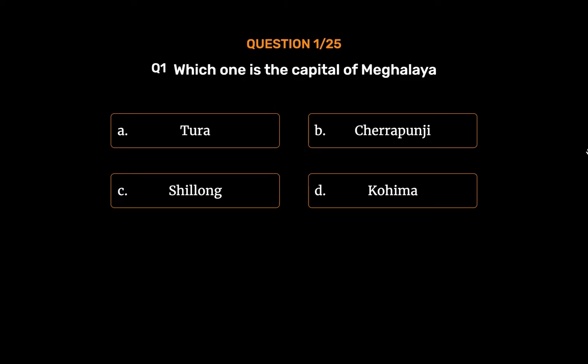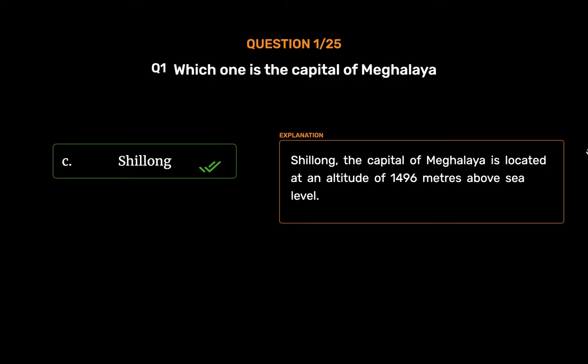The correct answer is Option C: Shillong. Shillong, the capital of Meghalaya, is located at an altitude of 1,496 meters above sea level.